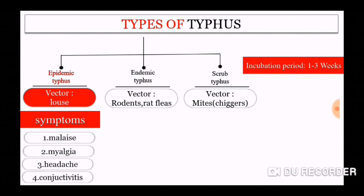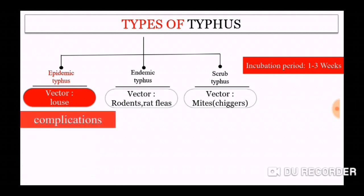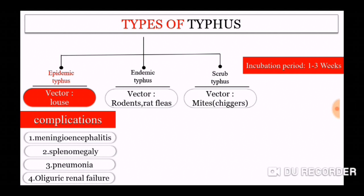The symptoms produced in epidemic typhus are mostly feverish symptoms like malaise, myalgia, headache, conjunctivitis, etc. The major complications include meningoencephalitis, splenomegaly, pneumonia, and oliguric renal failure.